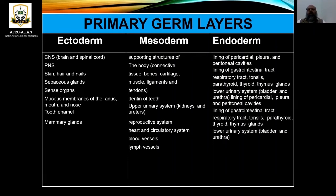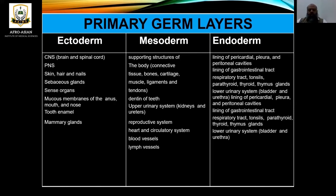The third layer is the endoderm, the innermost layer. It forms the lining of the pericardial, pleural, and peritoneal cavities, lining of the gastrointestinal tract, respiratory tract, tonsils, parathyroid glands, thyroid, thymus glands, and the lower urinary system. All these structures are formed from the endoderm.